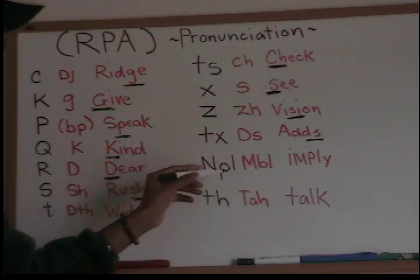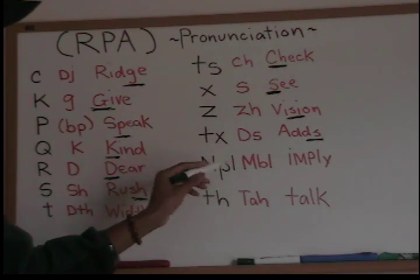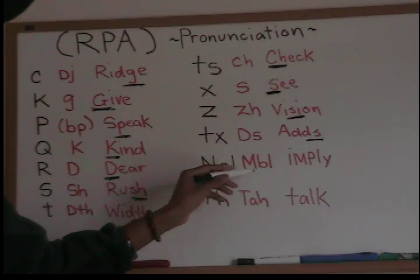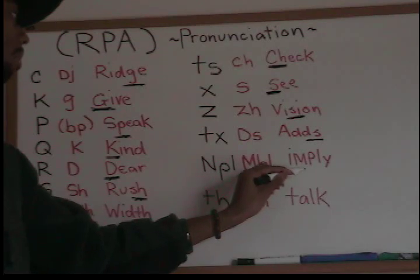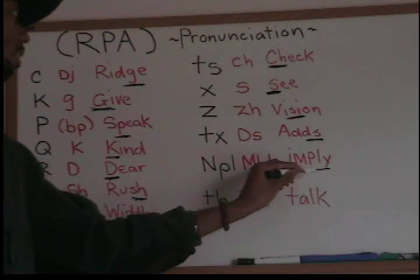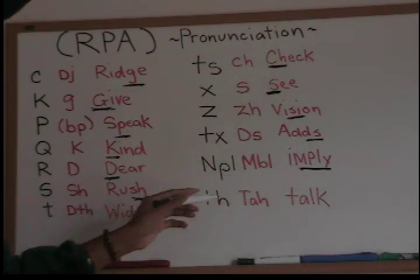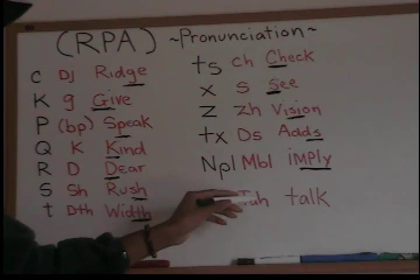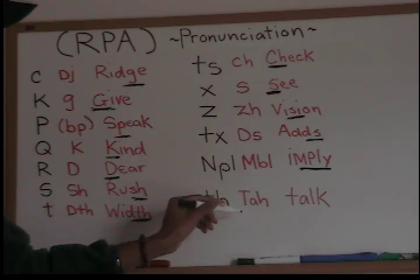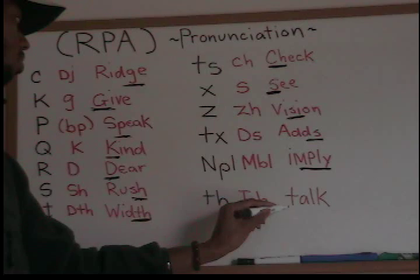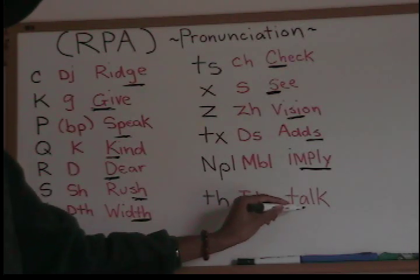NPL makes an MB sound, as in 'amply' — MB, MB, as in 'imply' or 'amply.' And TH in Hmong RPA is an aspirated T sound, as in 'talk' — a clear aspirated T. So those are your consonants for the RPA.